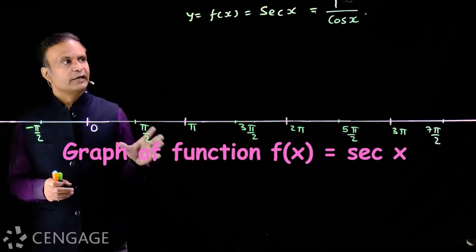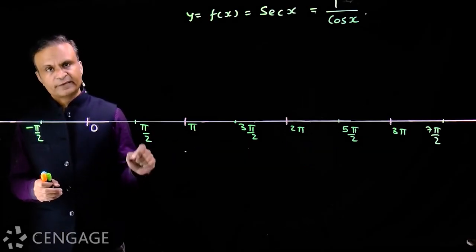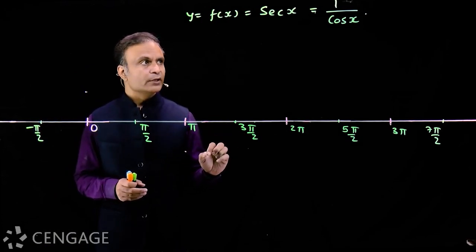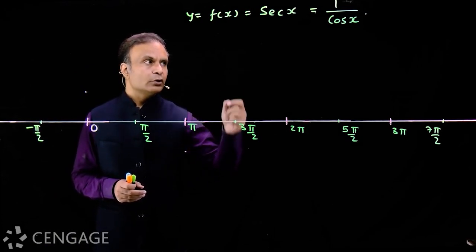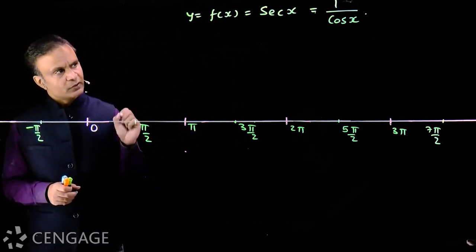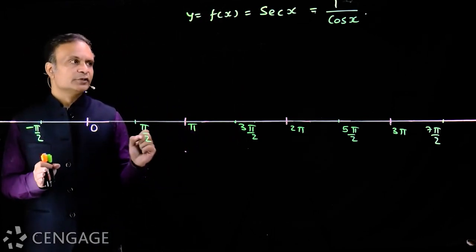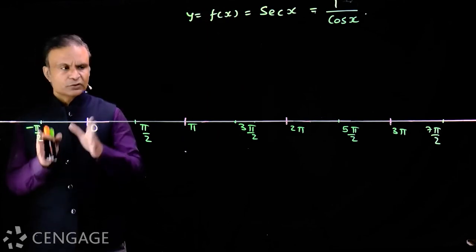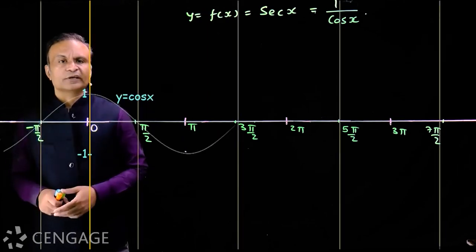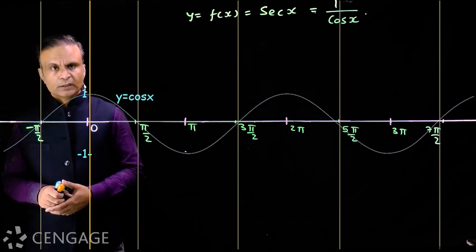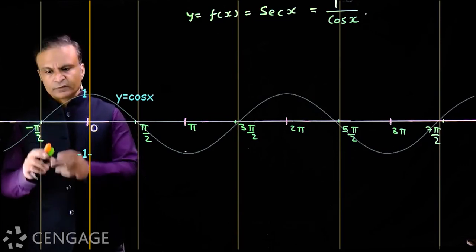Now let's draw the graph of function y = f(x) = sec(x). Since sec(x) = 1/cos(x), this function is defined for non-zero values of cos(x). We first draw the graph of y = cos(x).